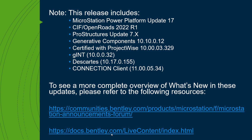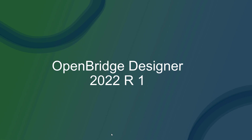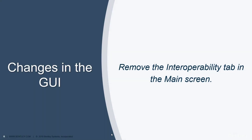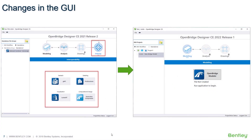What's new in OpenBridge Designer 2022 Release 1? We have changed the graphical user interface. We have included the Generative Components Engine inside the OpenBridge Modeler part, so we need to remove the icons corresponding to the applications. Generative Components is one of them, ProStructures as well. Now you can activate the license if you have one inside OBM. So we have streamlined the graphical user interface or GUI.